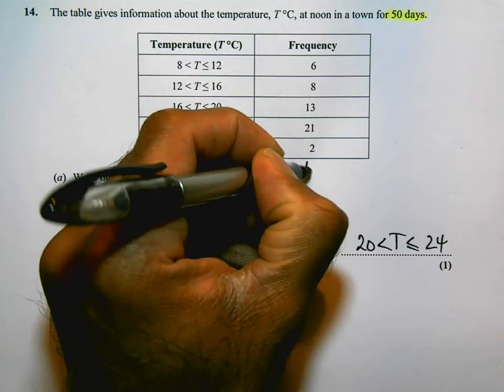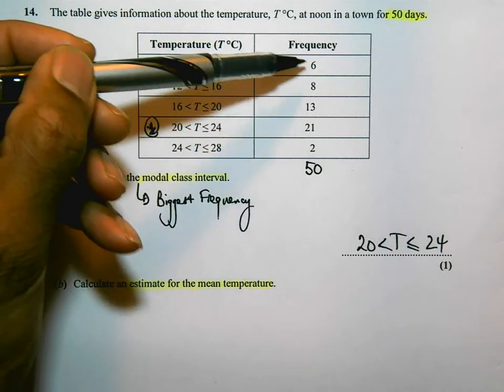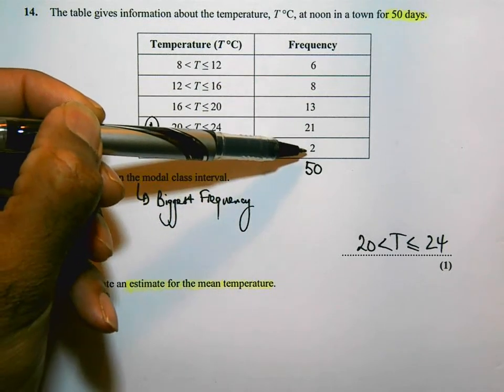The table gives information about the temperature for 50 days. So all of these frequencies should add up to 50. You could check it, but the question has told you. They add up to 50.